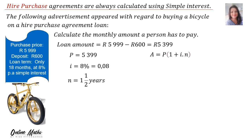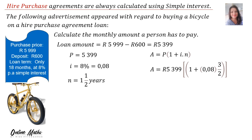Into the simple interest formula: A = P(1 + i × n). A = 5,399 × (1 + 0.08 × 3/2). The 3 over 2 represents 1 and a half years. Work all of that out in one go on your calculator — remember, no rounding off inside your sum, only the final answer. Therefore A = R6,046.88.